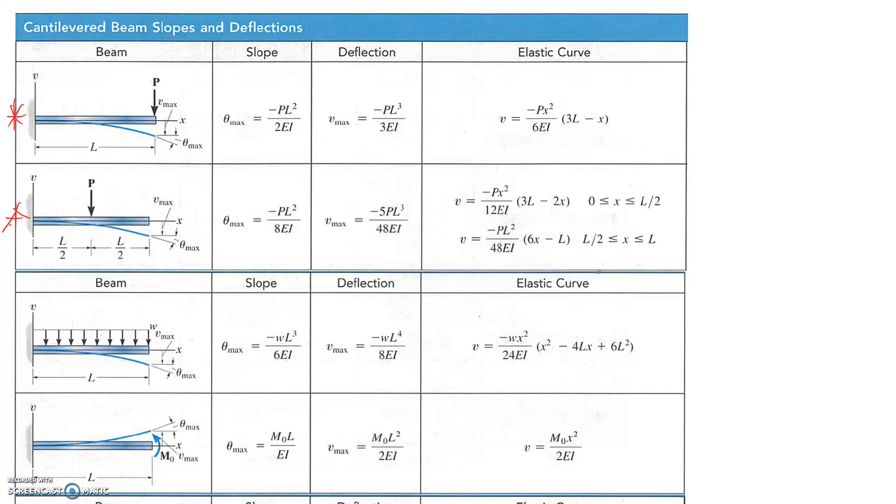We need to calculate the deflection and slope at the end of the beam, which in both cases is going to correspond to the maximum values. You can see that they're marked on here. V max and theta max happen at the ends. So the equations that we're interested in are these ones here that we need to copy out for our cases.